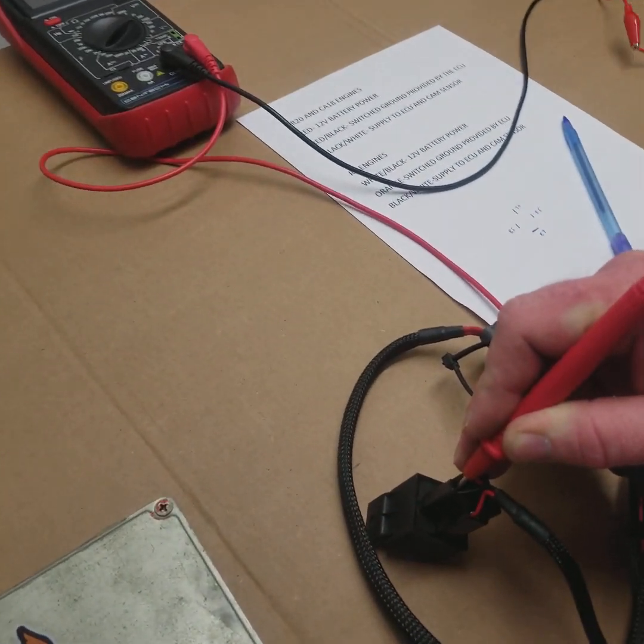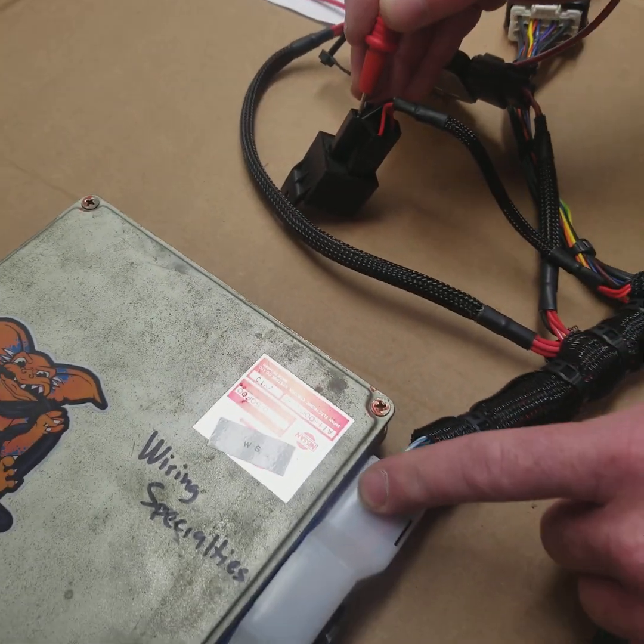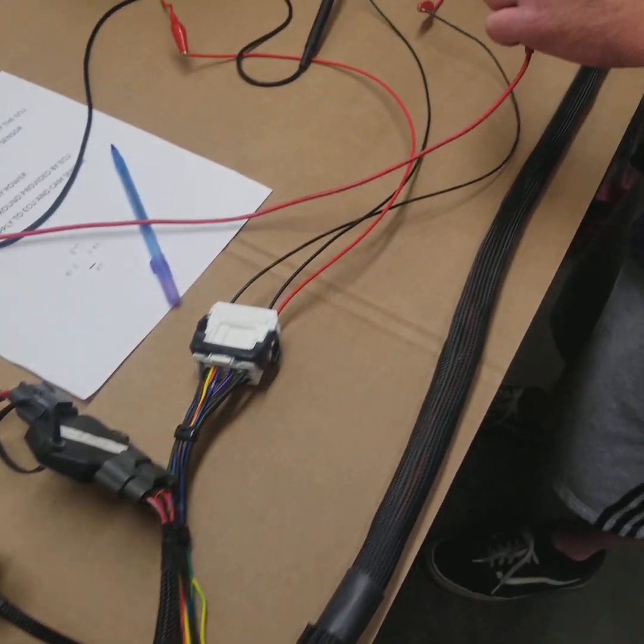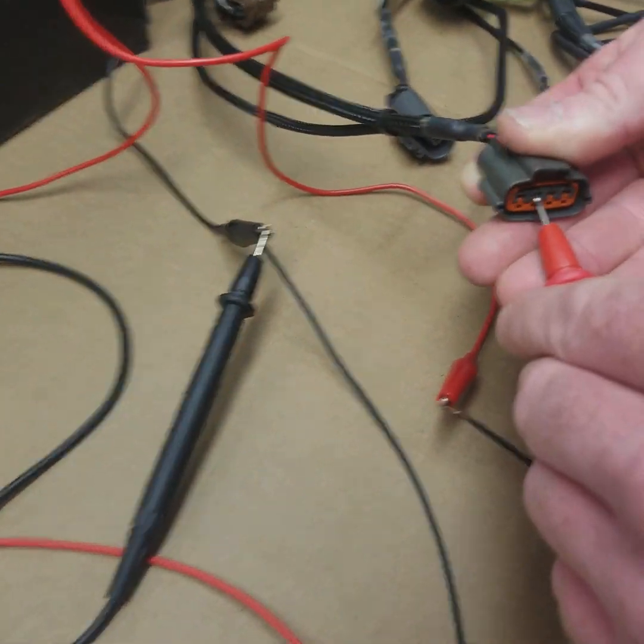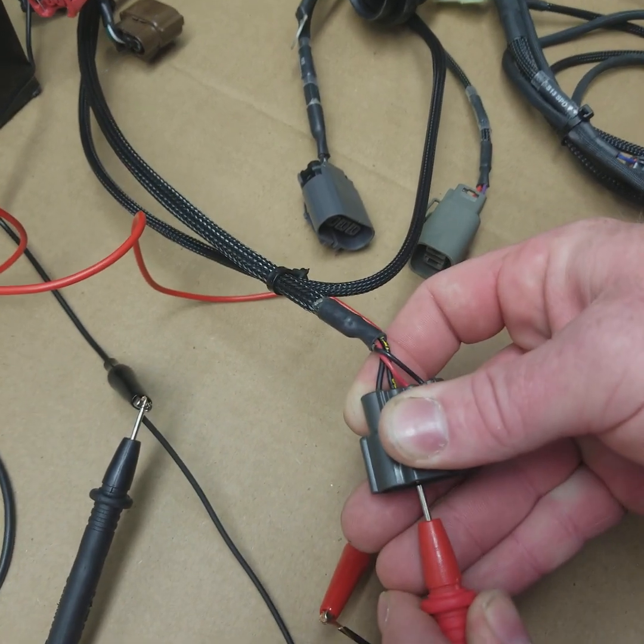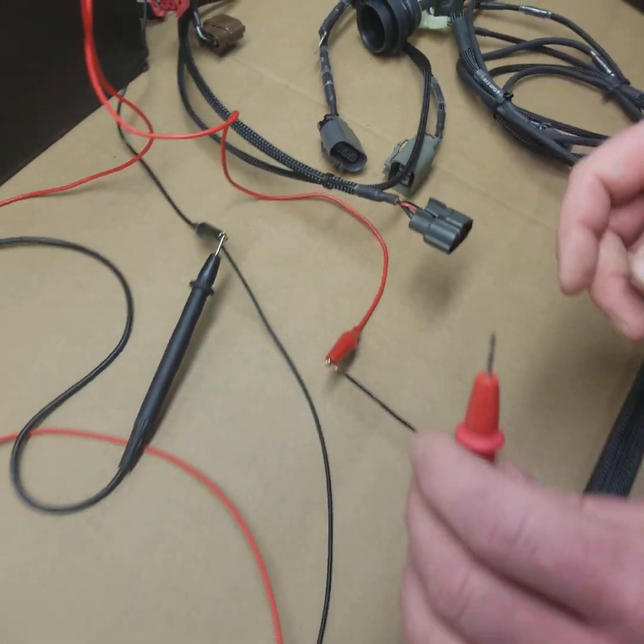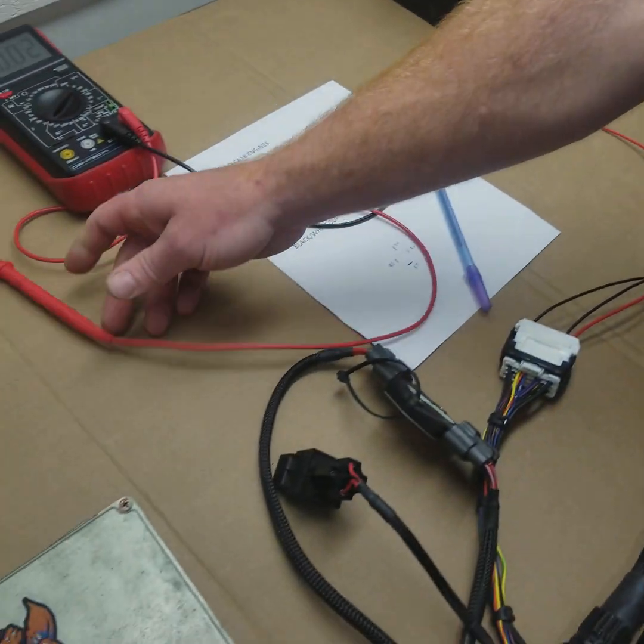Now that supplies a secondary power at the ECU, like I said, and it will also supply items like your cam angle sensor. So we should see 12 volts here now too, which we do. So everything on this is functional and working properly.